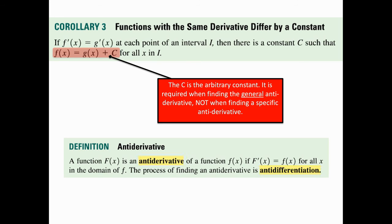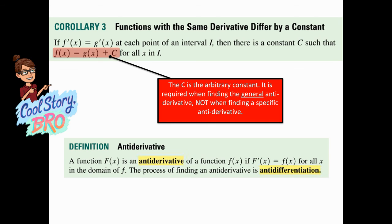When we say antiderivative, we're basically saying we're finding where did the derivative come from. So if your derivative is f prime, we're asking what was f. So when you do antiderivatives, you're doing a process called antidifferentiation.